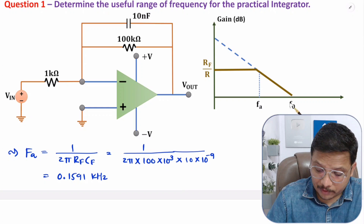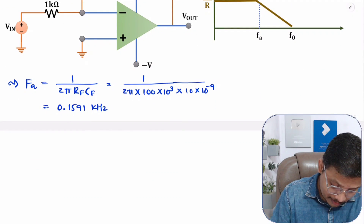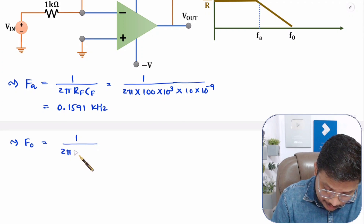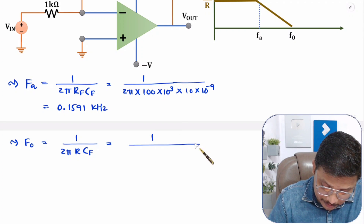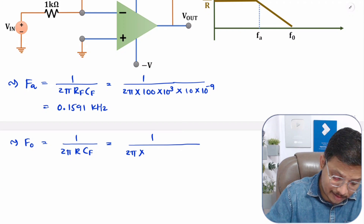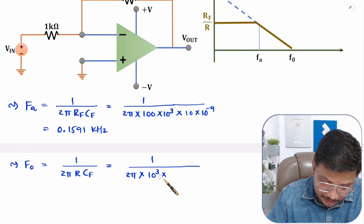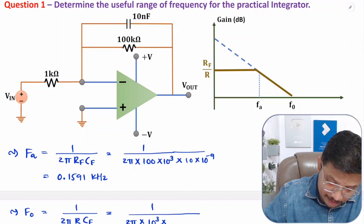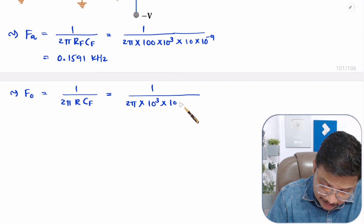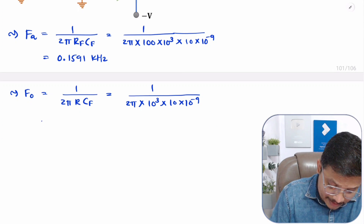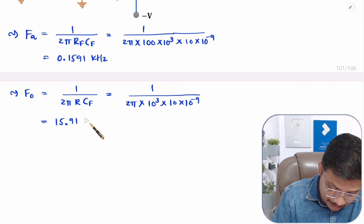Now let us calculate F0. The basic equation for F0 is 1/(2π·R·Cf). Substituting values: R is 1 kilo-ohm, so 1 × 10³, and Cf is 10 nanofarad, so 10 × 10⁻⁹. Solving this in a calculator gives F0 = 15.91 kilohertz.